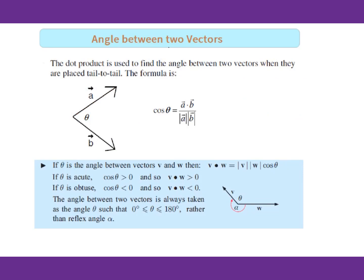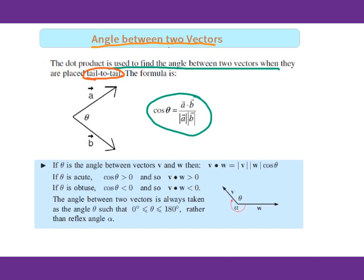Let's look at another concept: the angle between two vectors. The dot product is used to find the angle between two vectors when they are placed tail to tail. The formula gives us the relationship. Remember, this is very, very important — if you want to figure out the angle between two vectors, make sure they are placed tail to tail. If theta is the angle between vectors V and W, then this formula will hold.